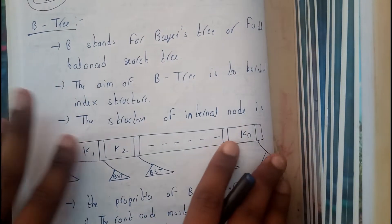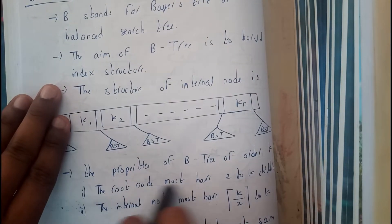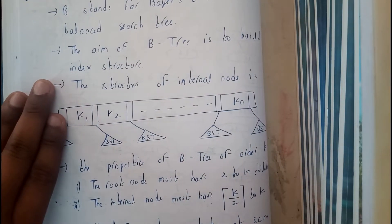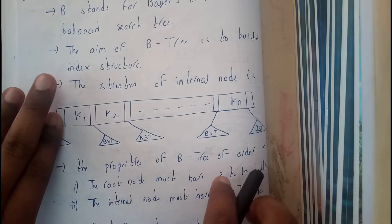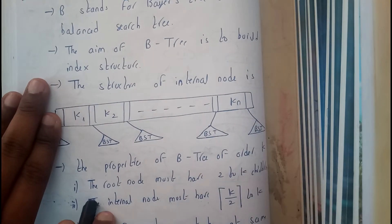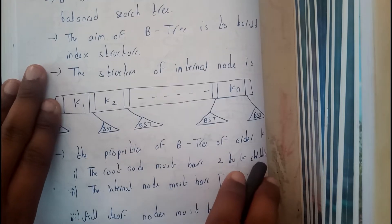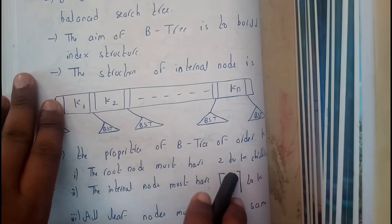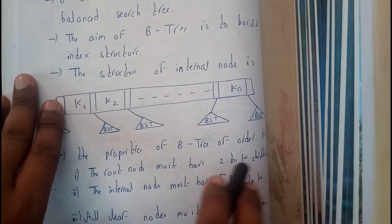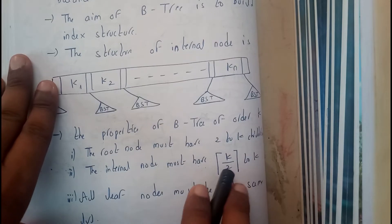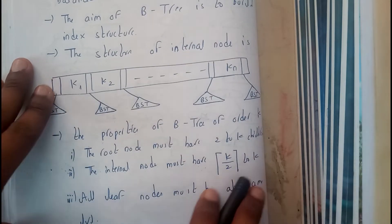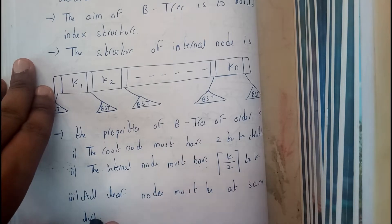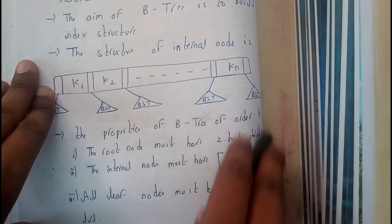The property of B-tree of order k — this is one of the most important key points you should remember. From the question, he'll be giving an order of some value. The root node must have 2 to k children, where k is the order. The internal node must have k/2 to k children. All leaf nodes must be at the same level.